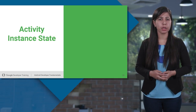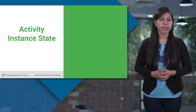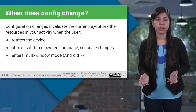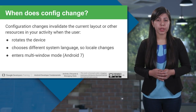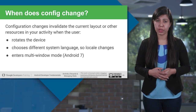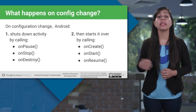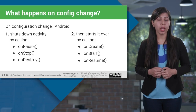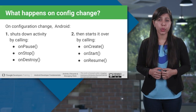In the life cycle of an Android activity, there are various points where the activity could be destroyed and need to be recreated. Configuration changes — like rotation of the device, choosing a different system language, or entering multi-window mode in Android 7 — invalidate the current layout or other resources. On a configuration change, Android first shuts down the activity by calling onPause, then onStop, then onDestroy. Then Android starts all over again by calling onCreate, onStart, and finally onResume.